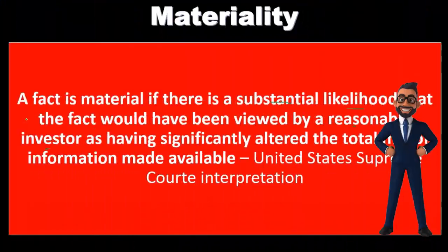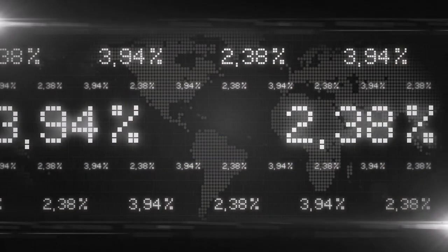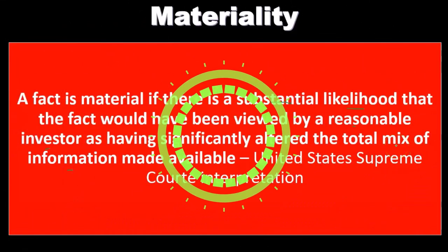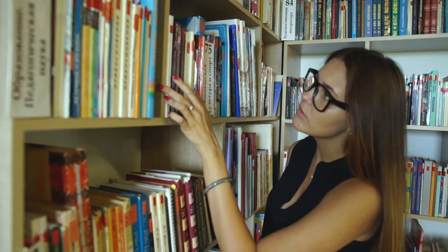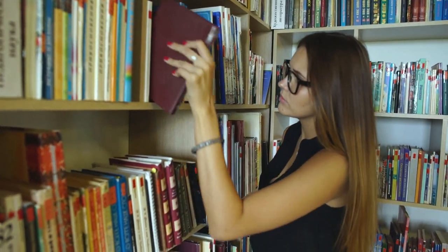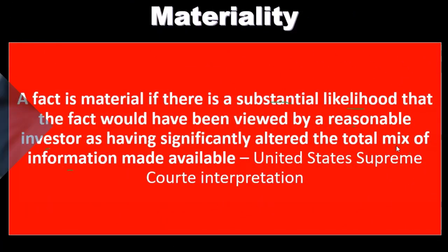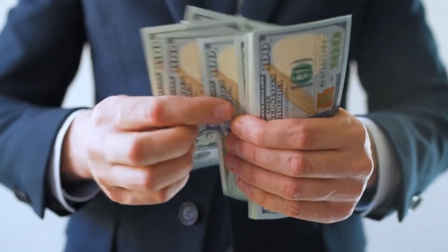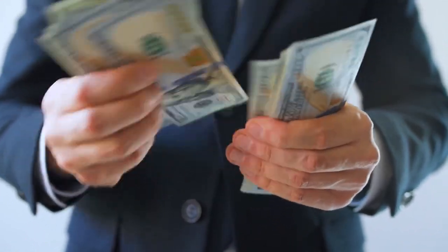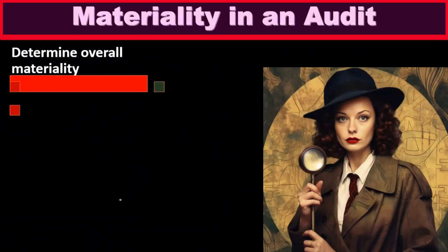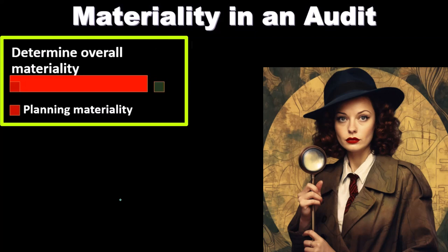There is some ambiguity in terms of what exactly materiality means as a quantifiable number, as having significantly altered the total mix of information. That misstatement we're looking at would alter the total financial statements or our opinion of those financial statements — typically due to an error or something omitted. So, how do we apply materiality to an audit? First, we're going to determine the overall materiality, which typically happens within the planning stage.